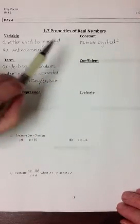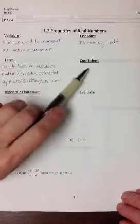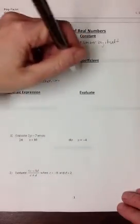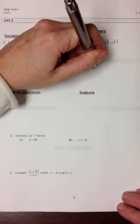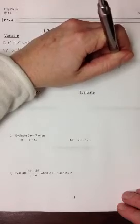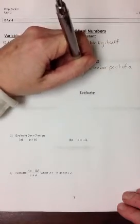Coefficient is also a number, but it's a number that's connected to a letter in a term. So it is the number part of a term.